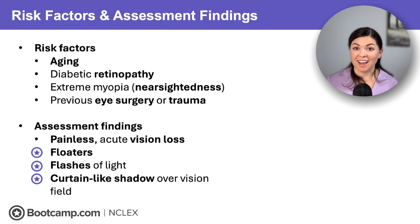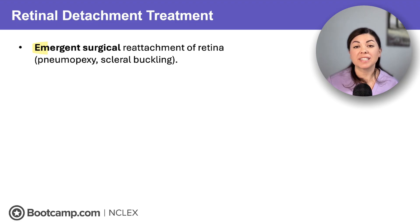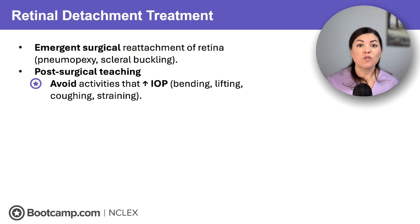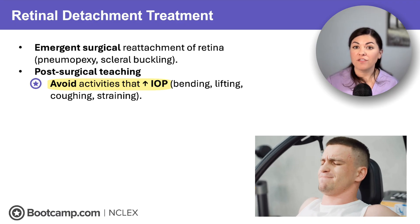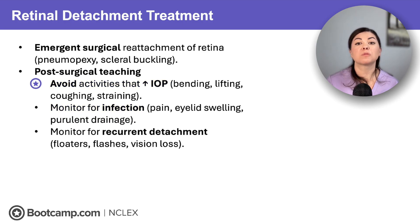Remember on NCLEX, painless vision loss with floaters, flashes of light, and a black curtain across the visual field is an emergency and you must intervene. Clients will need emergency surgery to reattach the retina. Post-operative care is key for success. For all eye surgeries, clients should avoid any activities post-operatively that can increase IOP, such as bending, lifting, coughing, or straining. We should also closely monitor for signs of infection, such as pain, eyelid swelling, and purulent drainage from the eye. After retinal detachment surgery specifically, clients should monitor for signs of recurrent detachment, such as floaters, flashes, and sudden vision loss.